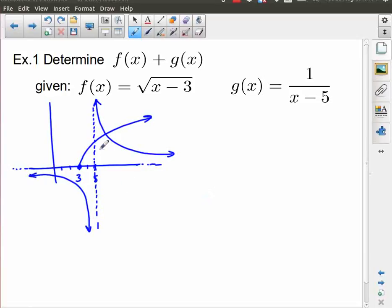Now if we take a look at this, where are these domains overlapping? So visually, you can see that the radical only goes here to 3. There's nothing to the left of 3, which means we're going to lose all of this. And the other big thing to keep in mind is that the reciprocal function has an asymptote at 5, which means we're going to lose X equals 5.